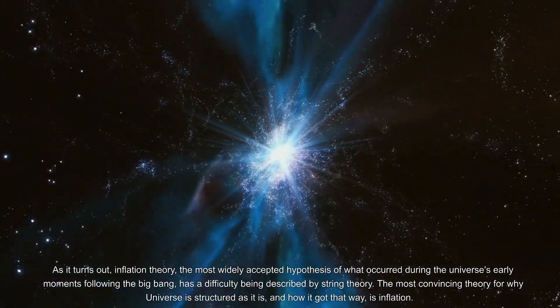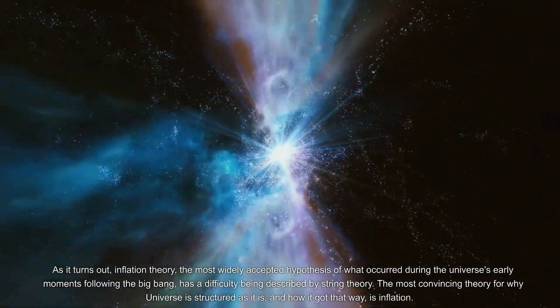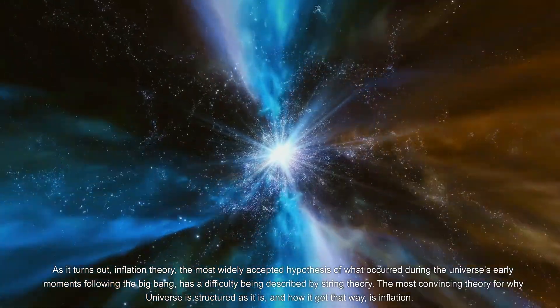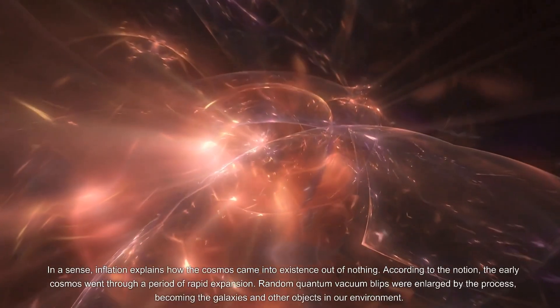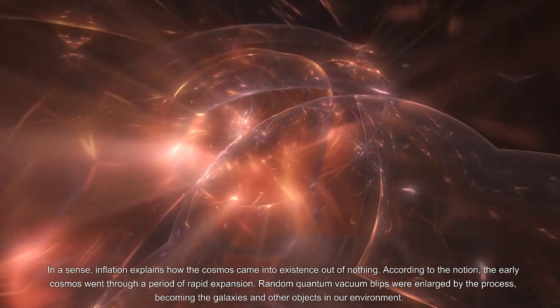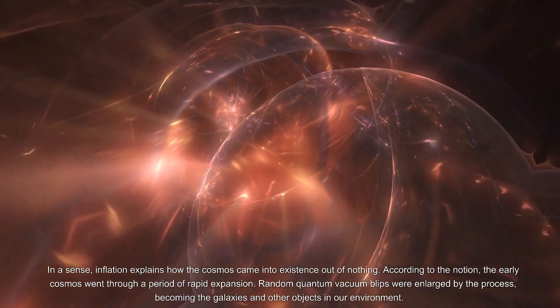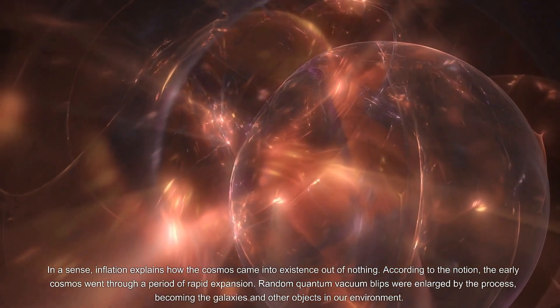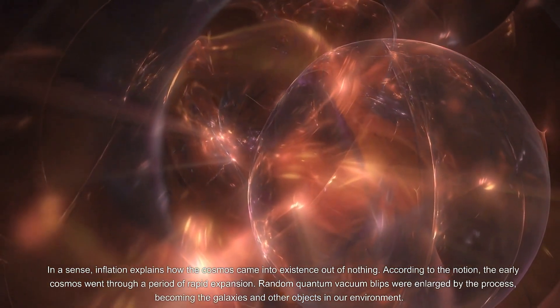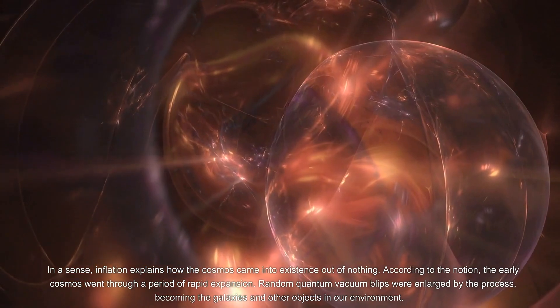The most convincing theory for why the universe is structured as it is and how it got that way is inflation. In a sense, inflation explains how the cosmos came into existence out of nothing. According to the notion, the early cosmos went through a period of rapid expansion. Random quantum vacuum blips were enlarged by the process, becoming the galaxies and other objects in our environment.